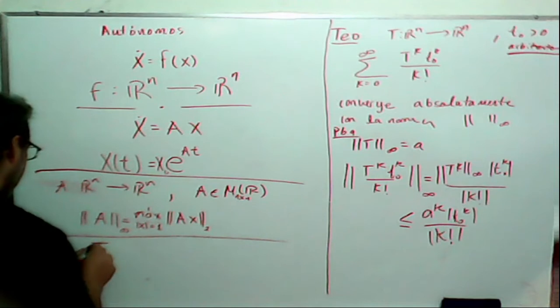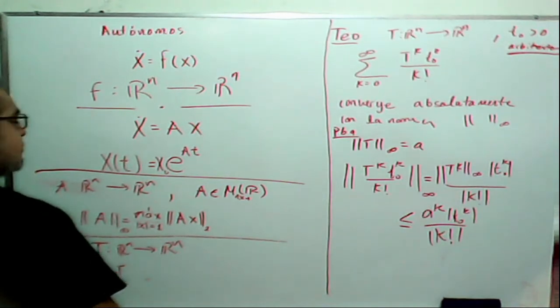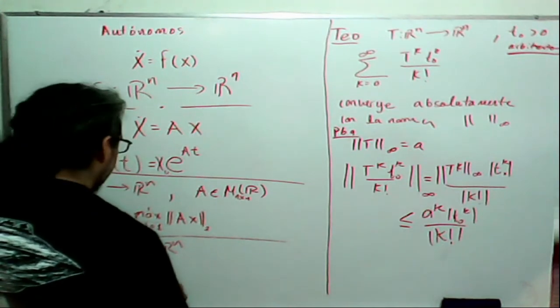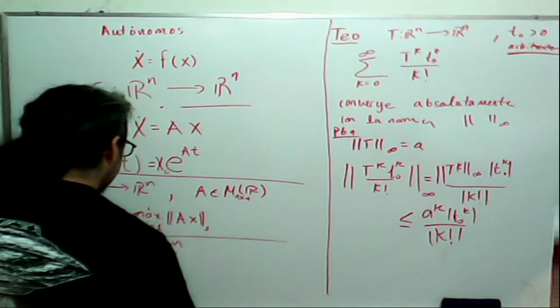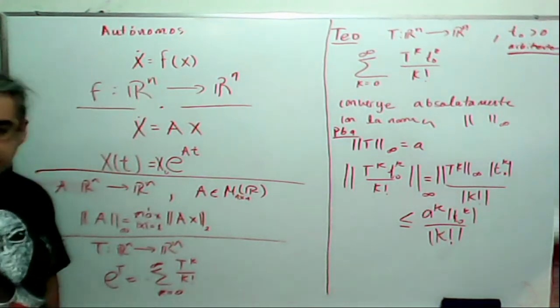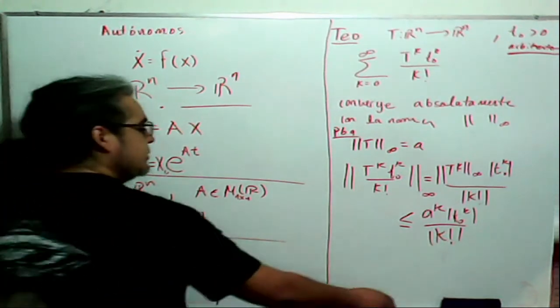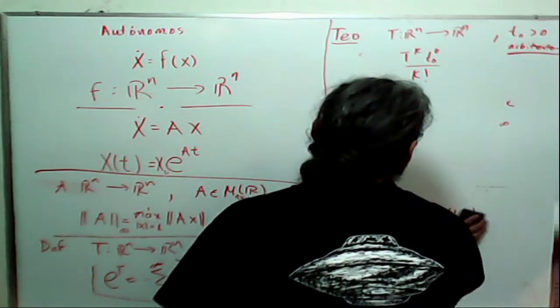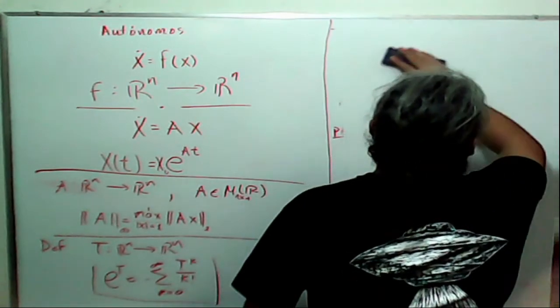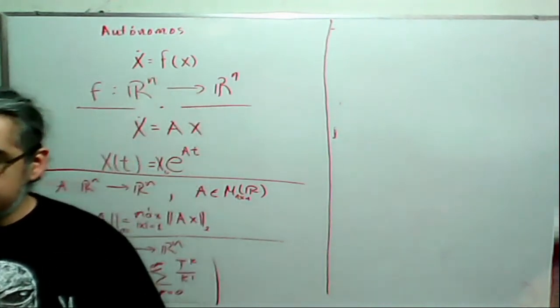The exponential, if I have a transformation that goes from R^n to R^n, the exponential of that transformation, or of that matrix, is going to be the sum, from K equals 0 to infinity, of T^K over K factorial. This thing here continues being a matrix, continues being a linear transformation of R^n in R^n, and it fulfills the following properties, that I am going to write without proving them, but that can be a good challenge if someone assumes to prove it step by step.